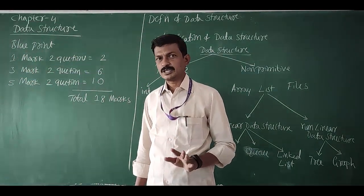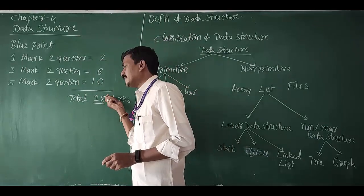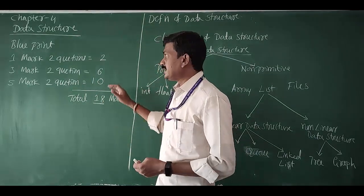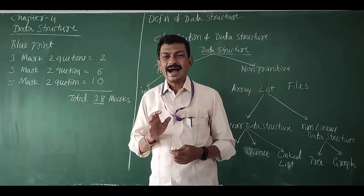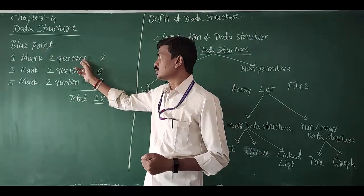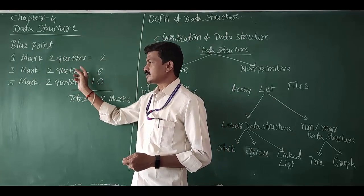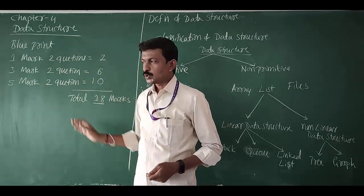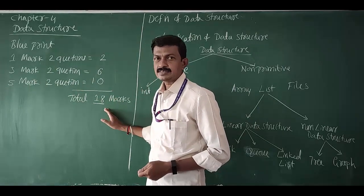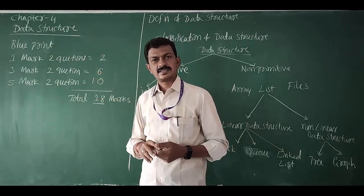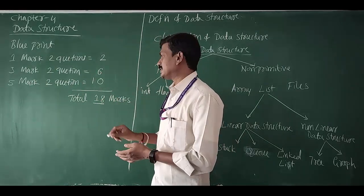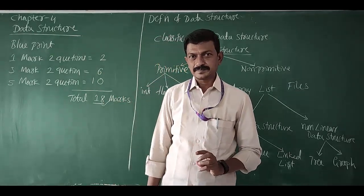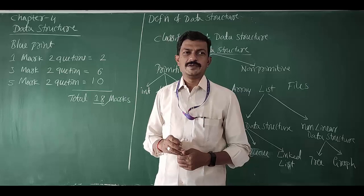Total 18 marks we are going to get from this data structure chapter. It is a very important chapter because we are going to get total 18 marks from this chapter. Here are the questions from 1 mark, 4 marks, and 5 marks. It is a very important and very large chapter in 2nd VOC.